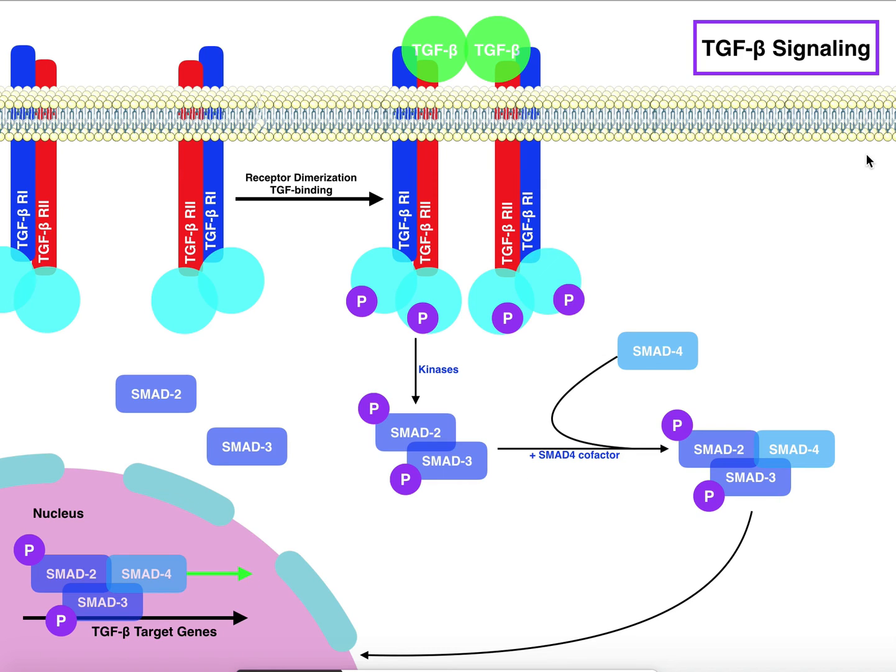Again, this is very similar to RTKs, at least in the first half of it, except the process is very short. You just phosphorylate some SMAD proteins, SMAD2 and 3, SMAD4 comes in, and then this complex, this heterodimer, moves into the nucleus and affects transcription. That's pretty much all there is to TGF-beta signaling.